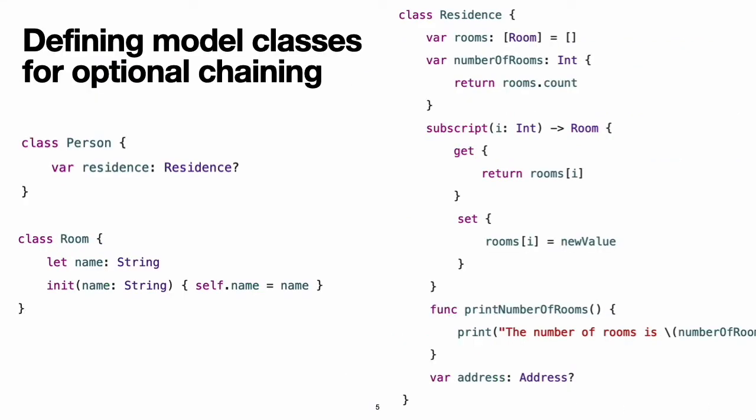Defining Model Classes for Optional Chaining. You can use optional chaining with calls to properties, methods, and subscripts that are more than one level deep. This enables you to drill down into subproperties within complex models of interrelated types and to check whether it is possible to access those properties, methods, and subscripts on those subproperties. The code snippets below define four model classes for use in several subsequent examples, including examples of multi-level optional chaining.